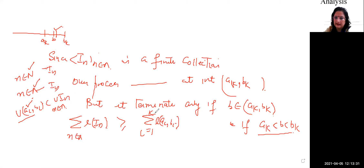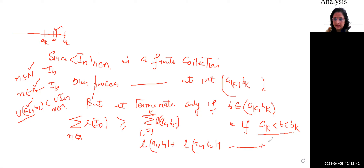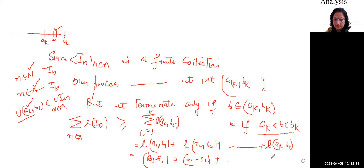Now we will write out the length of (AI, BI). This is: length of (A1, B1) plus length of (A2, B2), and so on. This equals (B1 minus A1) plus (B2 minus A2), and so on, up to (Bk minus Ak).